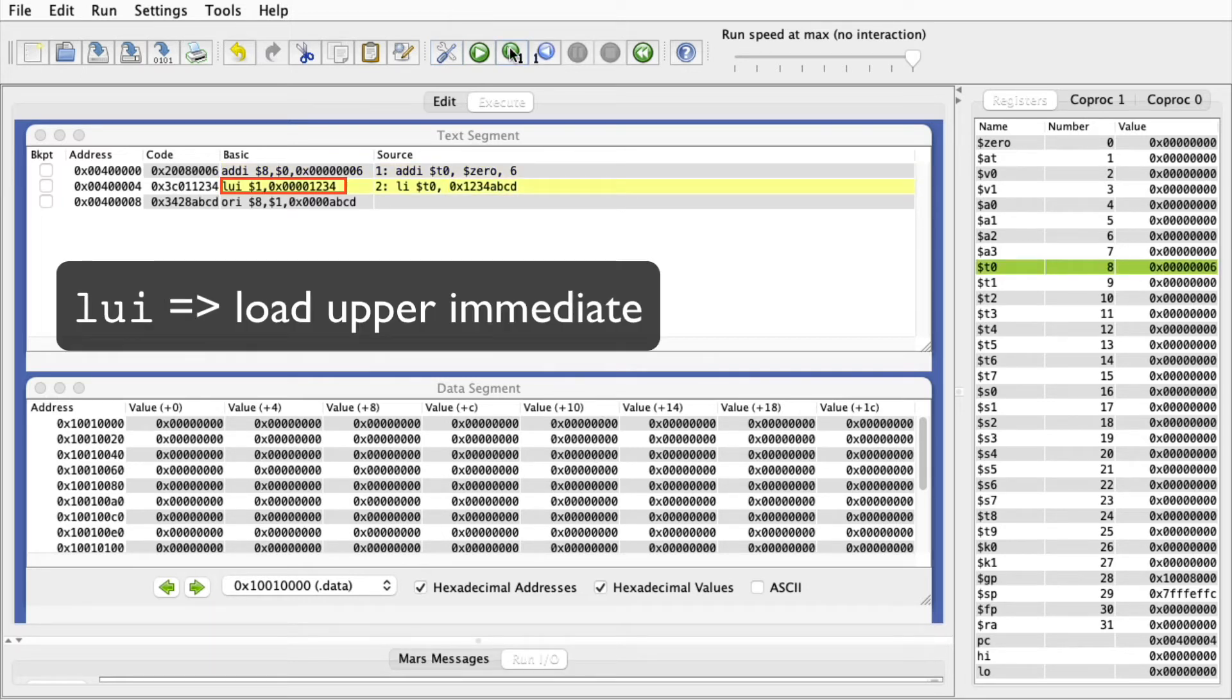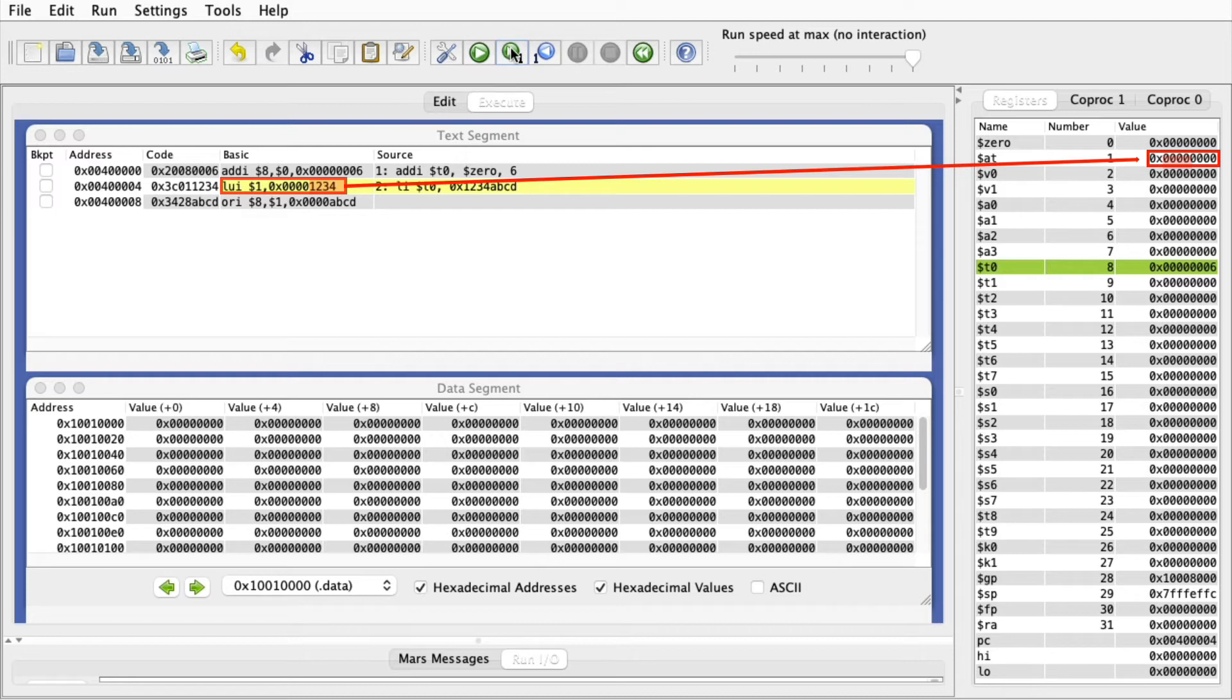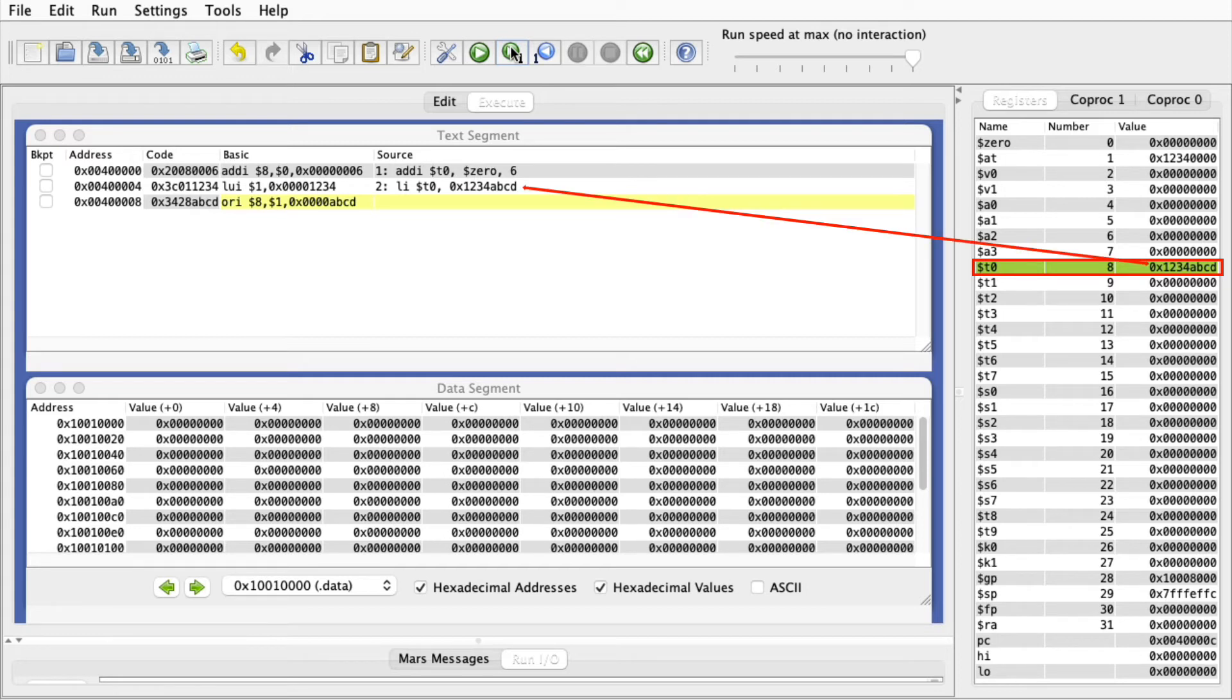The first instruction, LUI, stands for Load Upper Immediate. This instruction loads its immediate parameter, hex 1234, into the upper bits of the target register. Notice that register 1 now contains the hex value 12340000. The ORI instruction then computes the bitwise OR of register 1 with the lower 16 bits of the original immediate value, the hex abcd, and places the result into the desired destination, t0 in this case. Because LUI places zeros in the lower 16 bits, the ORI has the effect of just filling in the lower immediate bits into that target register, effectively reassembling the original 32-bit immediate value.